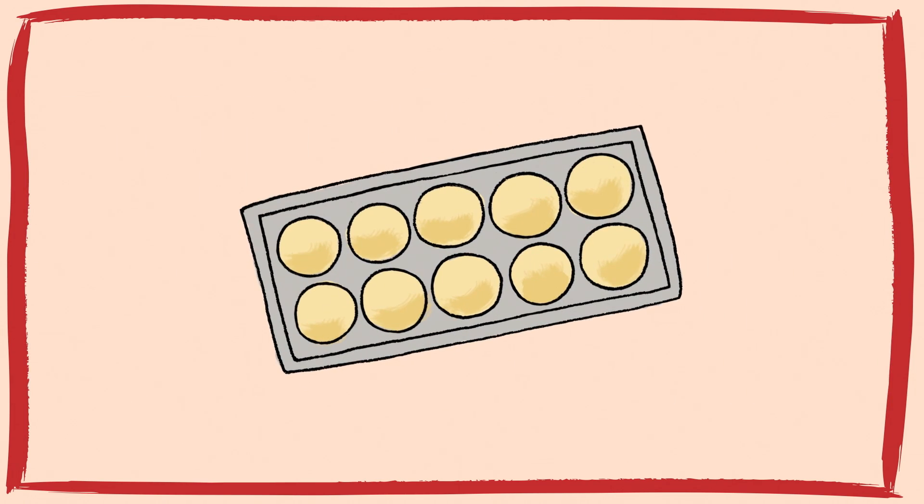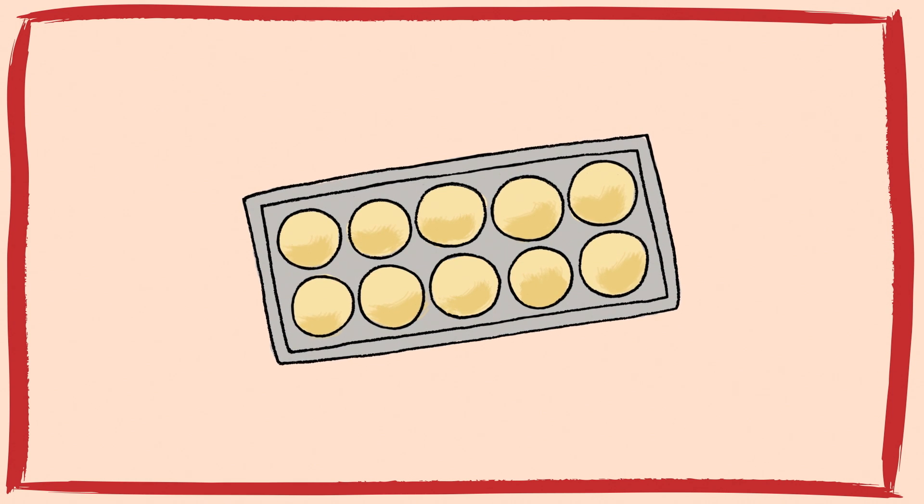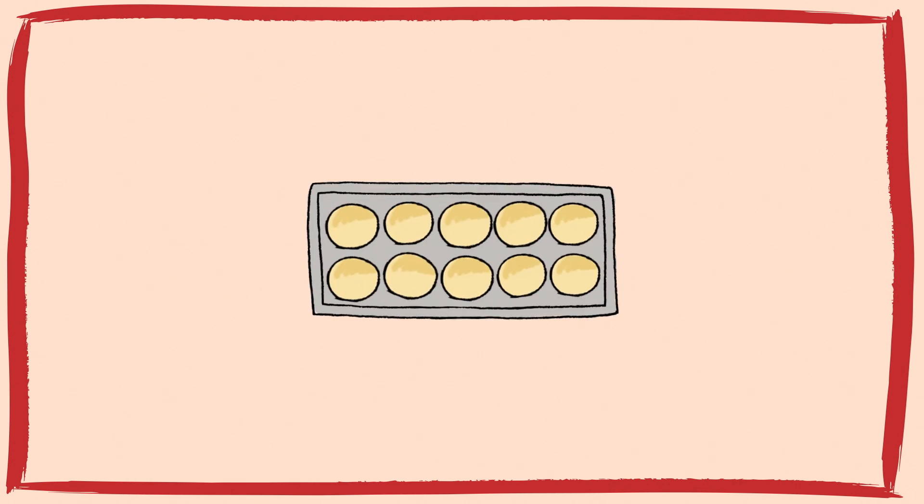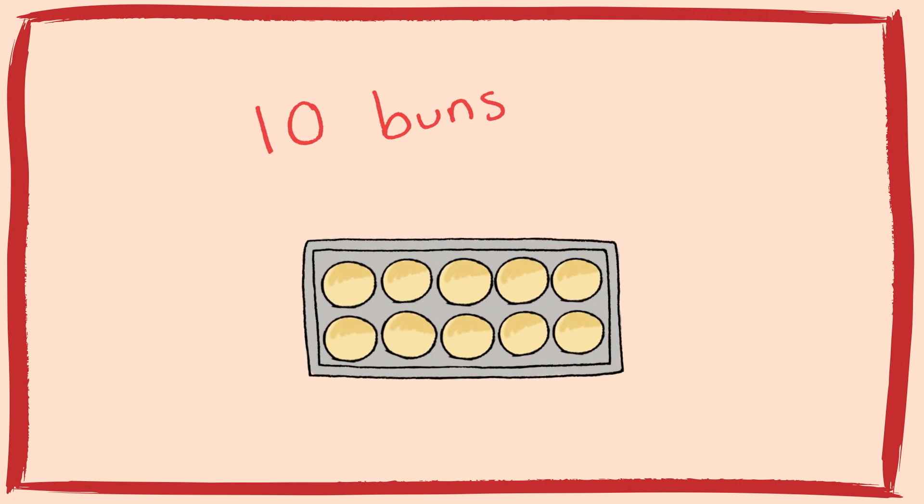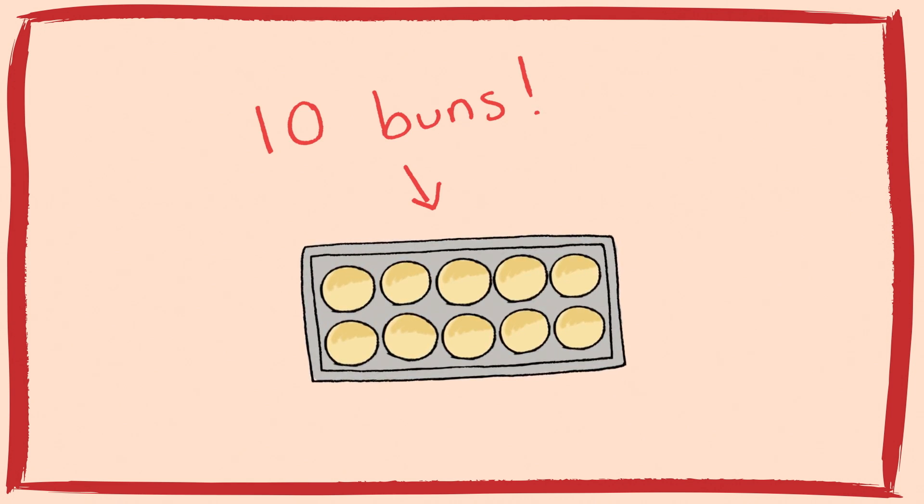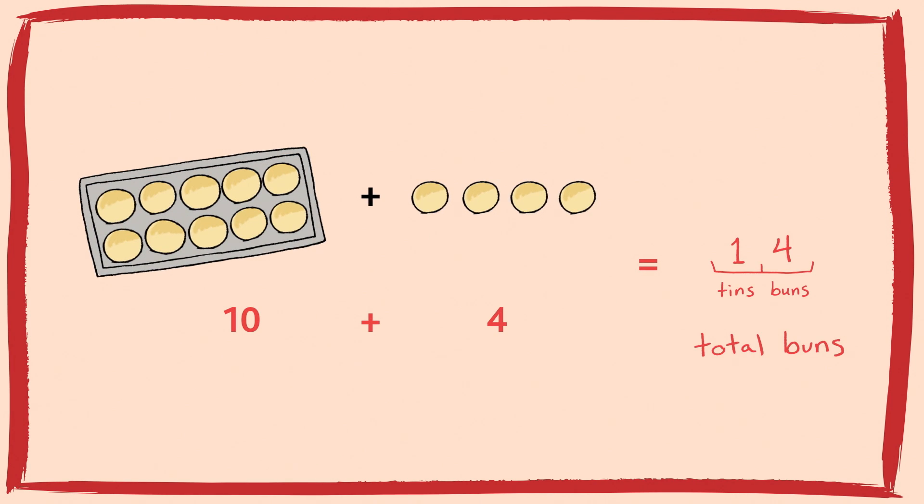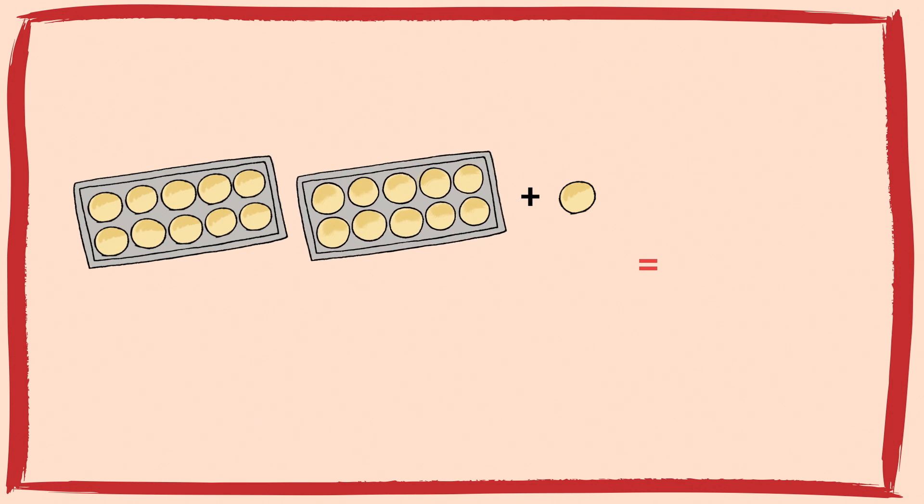You see, all the tins were the same size and they always held 10 buns each. So, instead of having to count 10 buns like this, they could instead fill up a tin and ta-da! They knew for sure there were 10 buns inside without even having to count. Wow, so much easier. So, if someone ordered 14 buns, Lynn could just fill up a tin and then add 4 more like this. Or, if someone ordered 21 buns, Lynn would just give them 2 full tins and 1 extra bun because 20 plus 1 is 21!